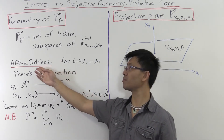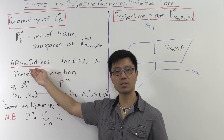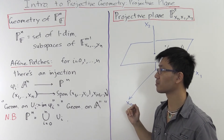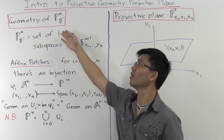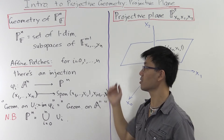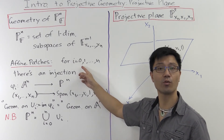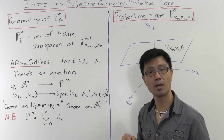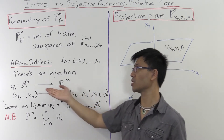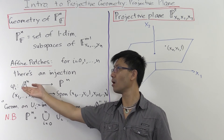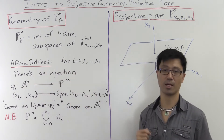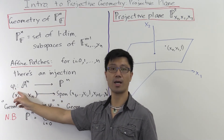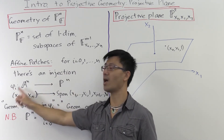So these subsets are often called affine patches. In the case of the projective line, they were just affine lines. In this case, for PN, we'll need more patches. We're going to need one for each index i from 0 up to n, so n plus 1 patches indexed by i.